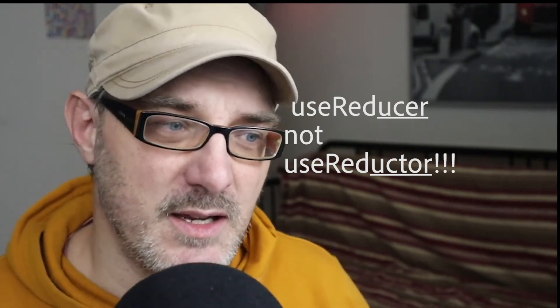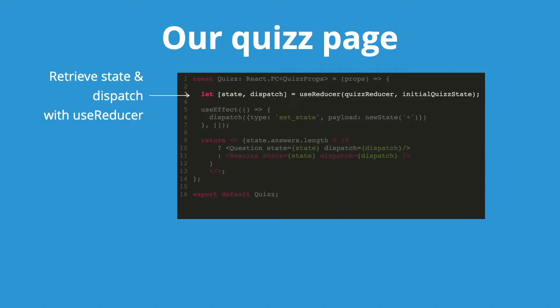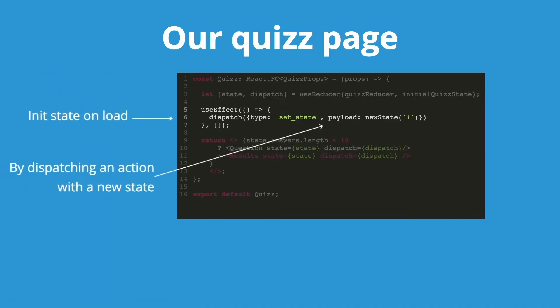The useReducer function takes the quiz reducer, which we've just seen, and an initial quiz state. Our useReducer returns the current state and the dispatch function, and this dispatch function is what allows us to dispatch new actions and update the state.